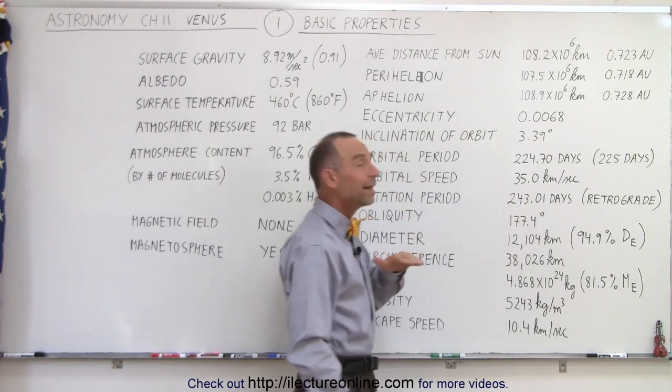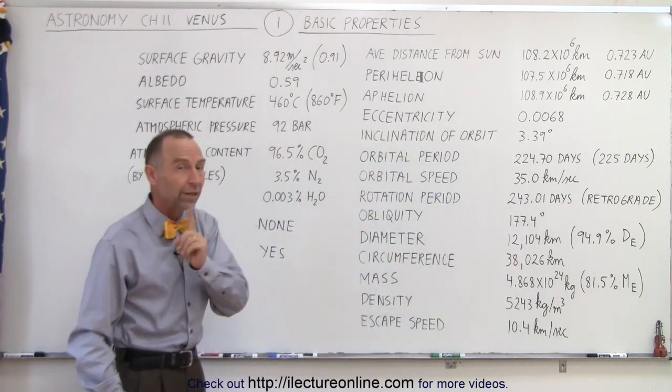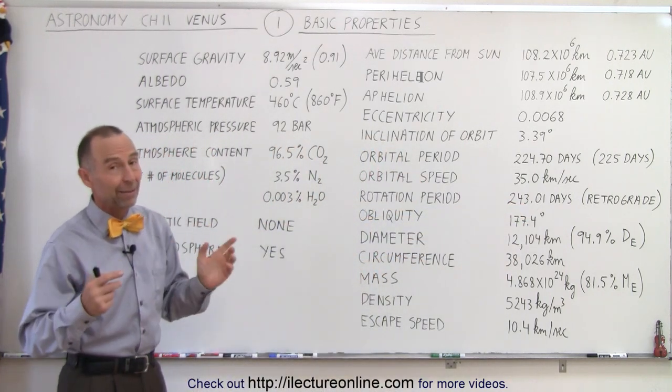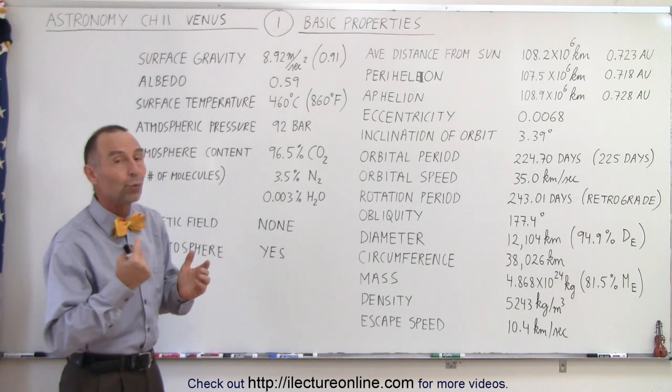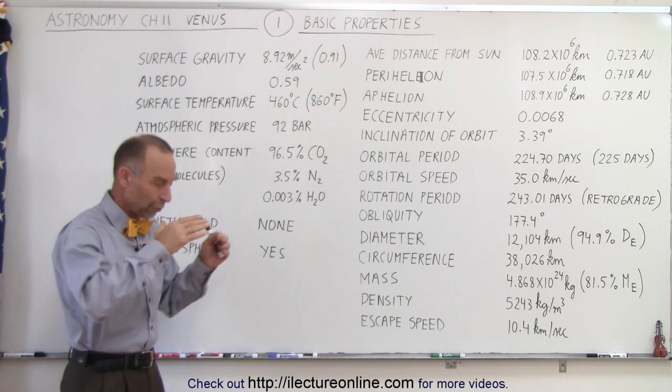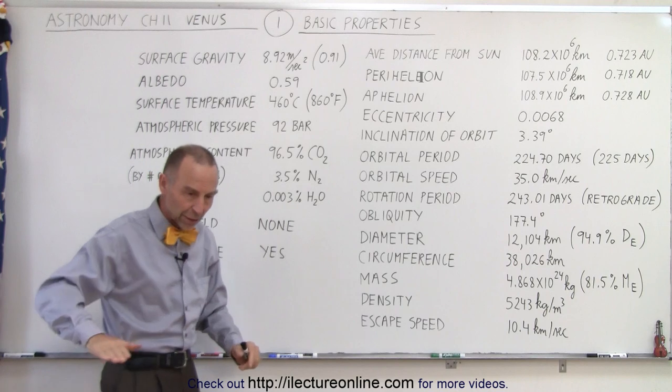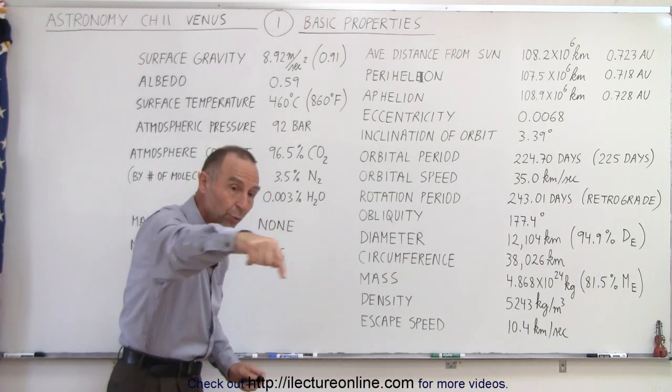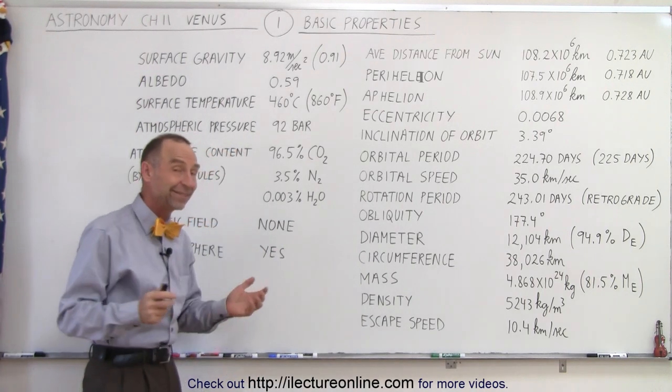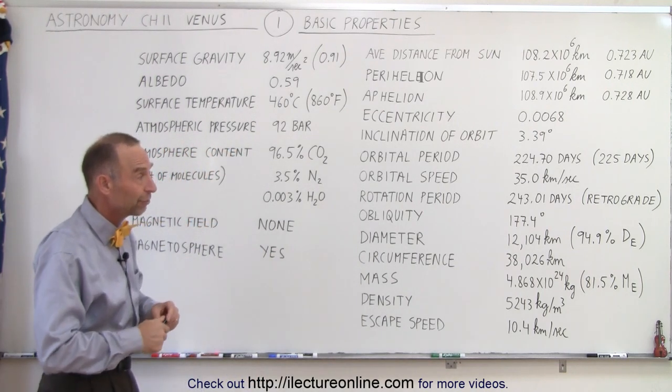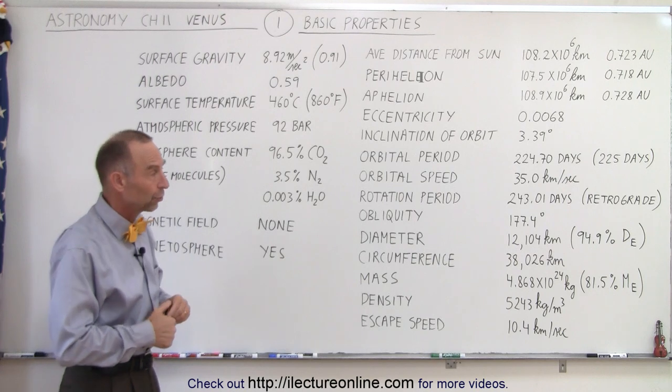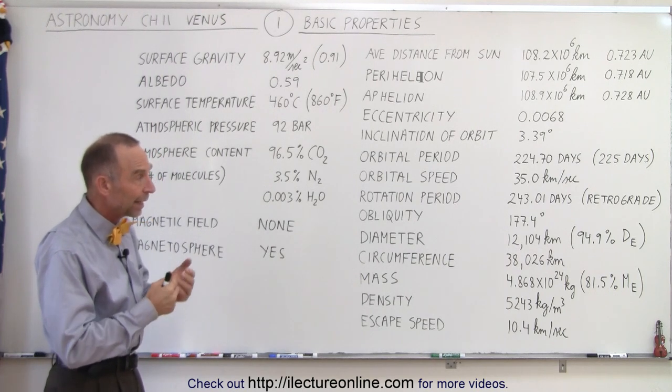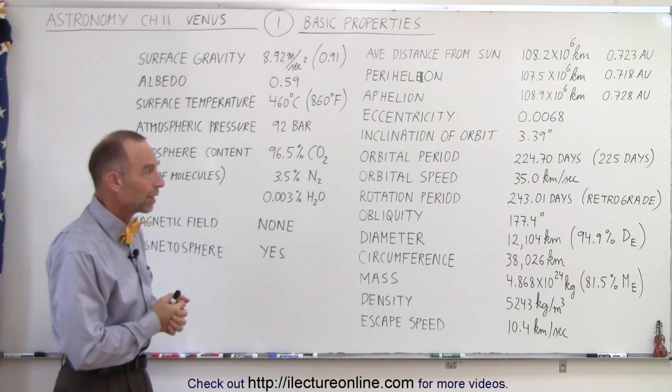What's interesting is that the rotational period is actually longer. It takes 243 days for the planet to make one rotation on its axis, and by the way, the rotation is retrograde. Looking from the north, the planet goes around the Sun in a counterclockwise direction while it's rotating in a clockwise direction. It's only one of two planets, including Pluto, that rotates in a retrograde motion.